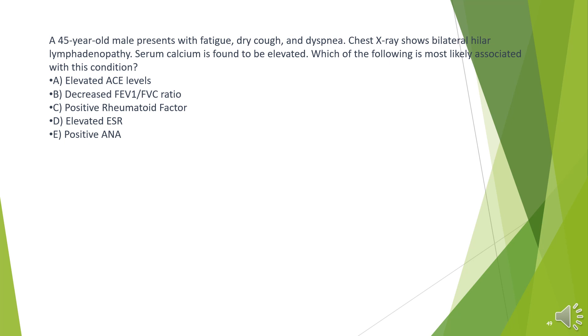A. Elevated ACE levels. B. Decreased FEV1/FVC ratio. C. Positive rheumatoid factor. D. Elevated ESR. E. Positive ANA.